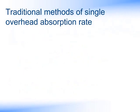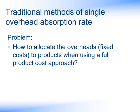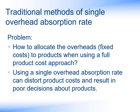To appreciate why ABC can be beneficial, it is useful to look at an example of using what we would call a traditional method of overhead absorption. The problem we are faced with in costing products is how to allocate the overheads or fixed costs to products when using a full product cost approach. Traditionally, we would use a single overhead absorption rate, but as we will see later, this can distort product costs and even result in poor decisions about products.